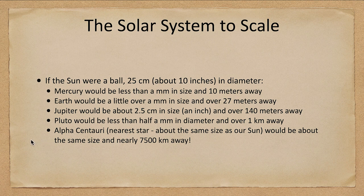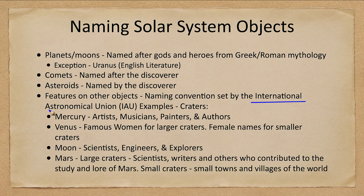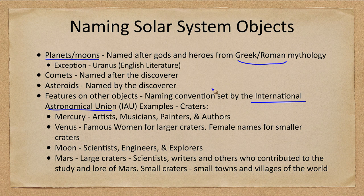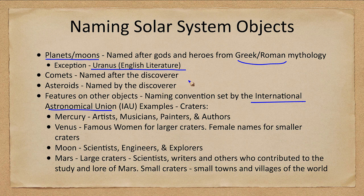Now where do these objects get their names? They are named by the International Astronomical Union. The conventions are set by the IAU. For the most part, planets and moons are named after the gods and heroes from Greek and Roman mythology. With one exception, Uranus has moons named after characters from English literature. So everything else from Greek and Roman mythology, Uranus a little bit different.